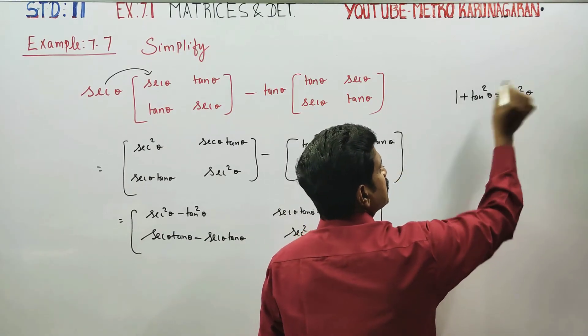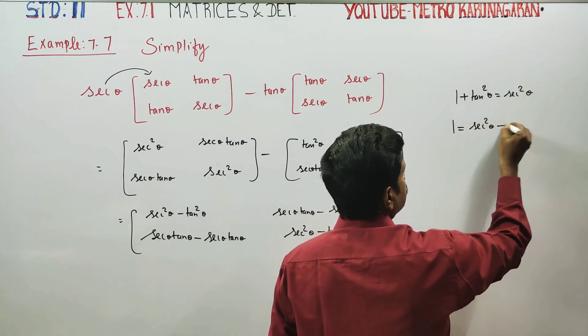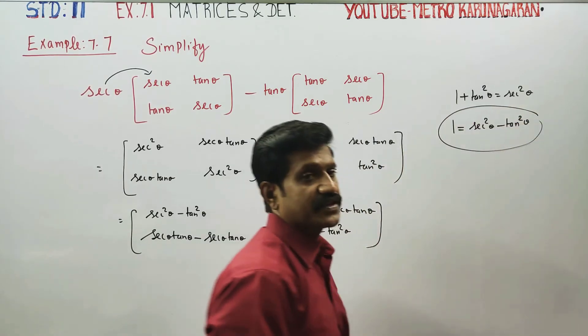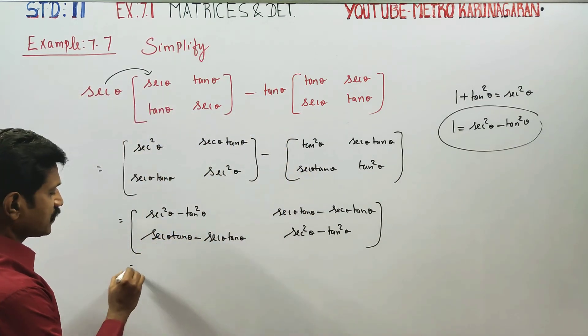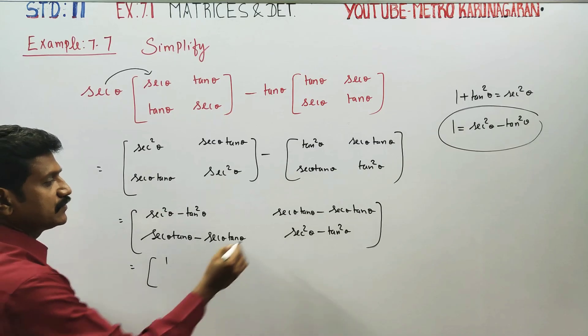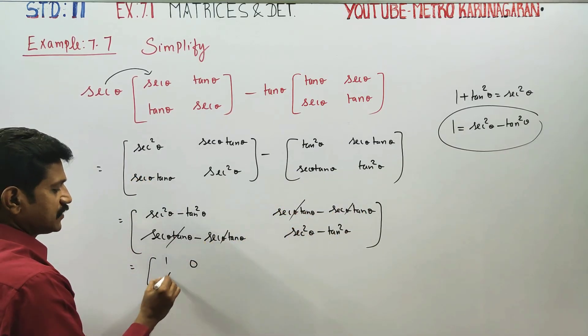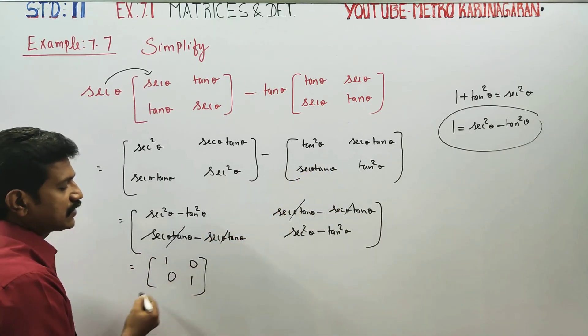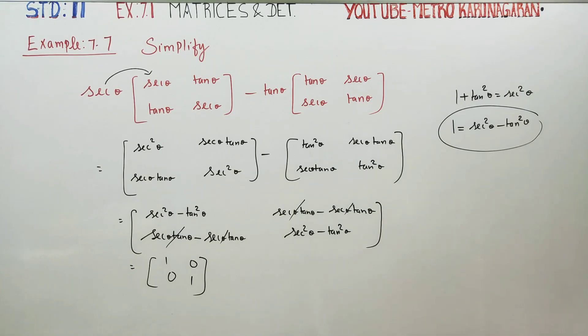One is equal to secant squared theta minus tan squared theta. Since secant squared theta minus tan squared theta is 1, your final answer will be 1, 0, 0, 1. Thank you.